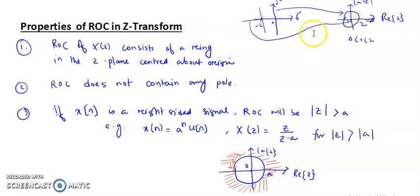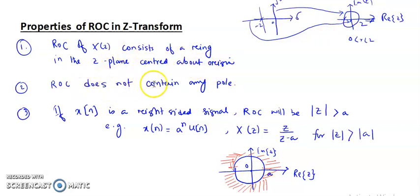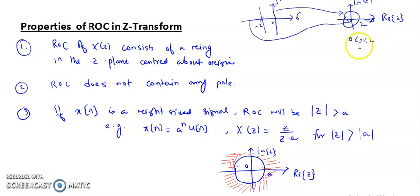So the region of convergence (ROC) of X(z) consists of rings in the z-plane centered about the origin. The circle or ring centered about the origin in the z-domain represents the region of convergence. The ROC does not contain any pole. For example, if sigma equals minus two, the corresponding ROC is a circle with radius r equal to two, so the ROC is 0 < r < 2. All circles inside radius r equal to two are included in the ROC.